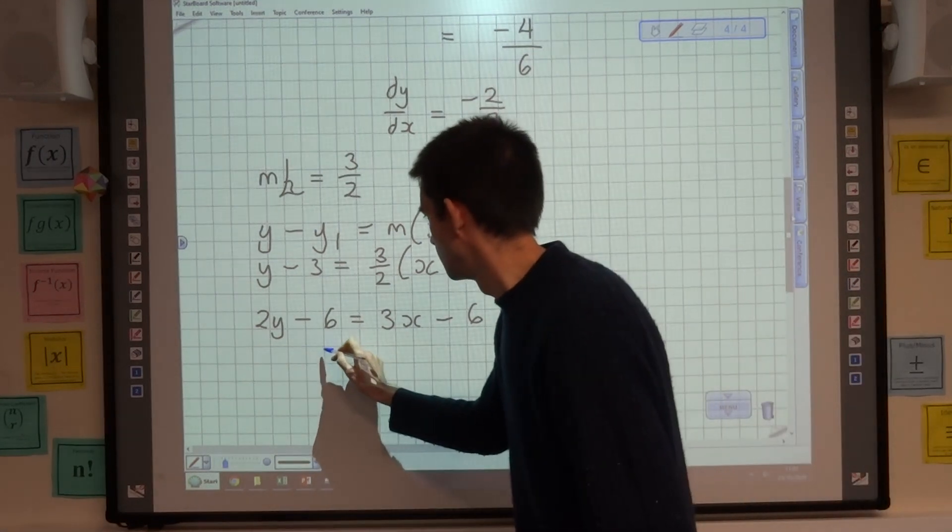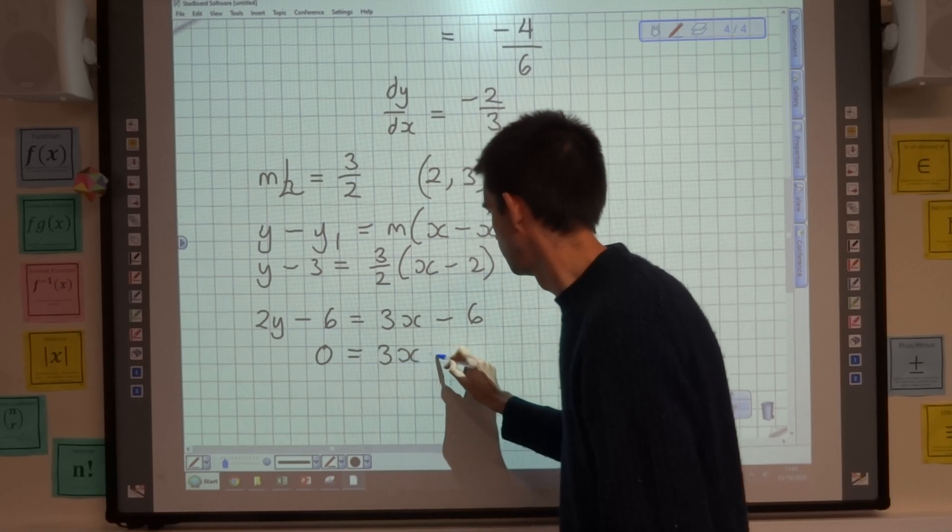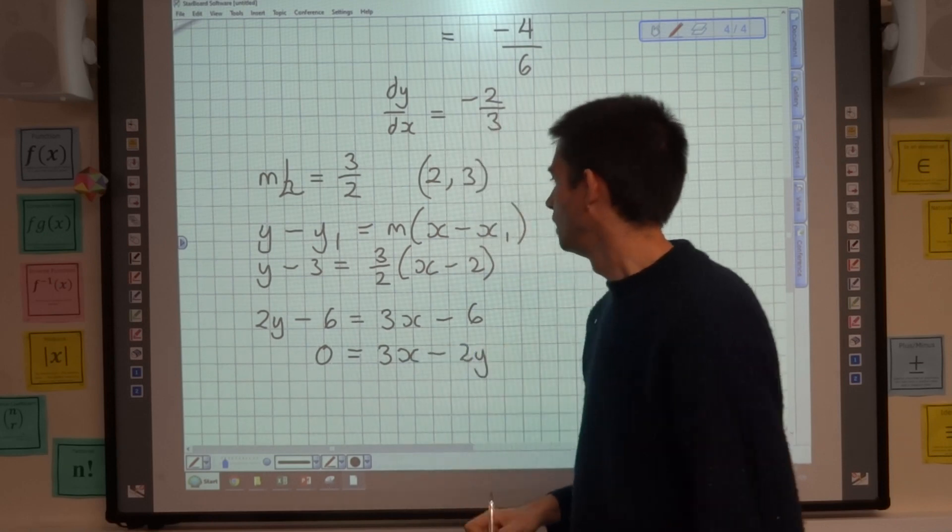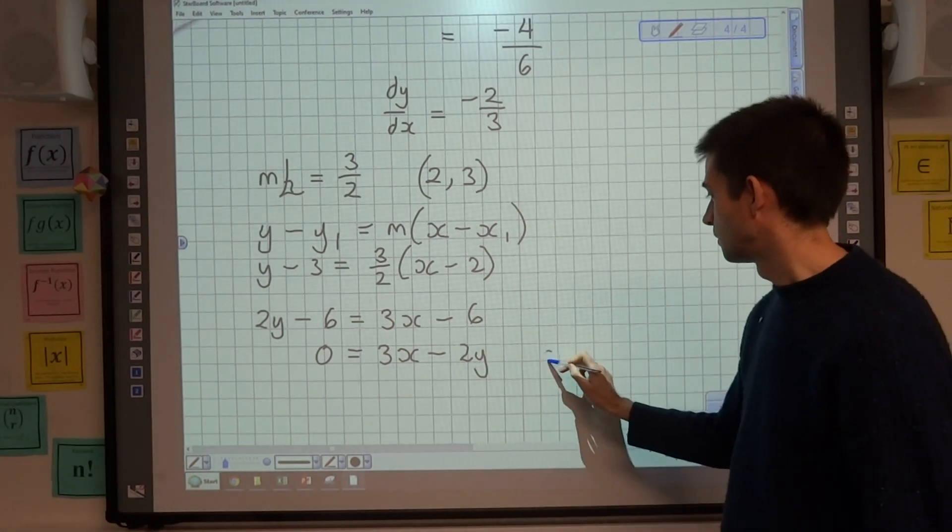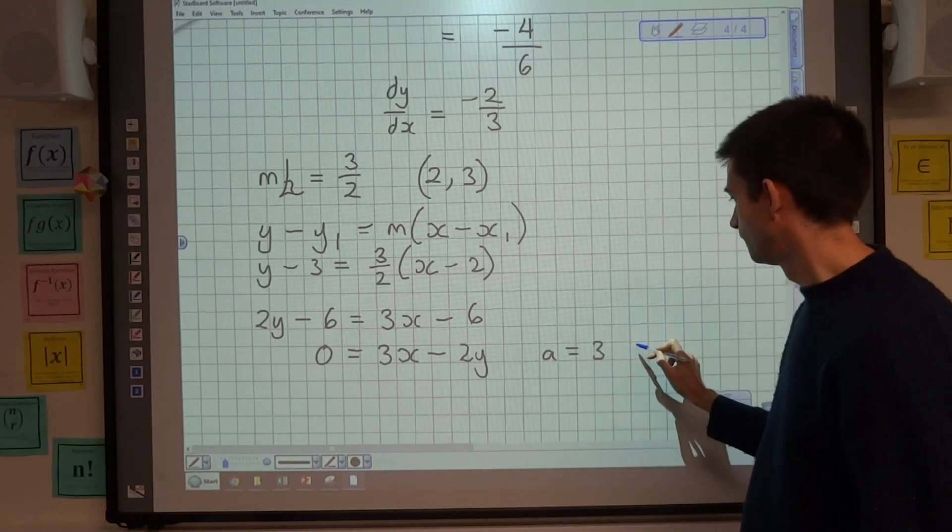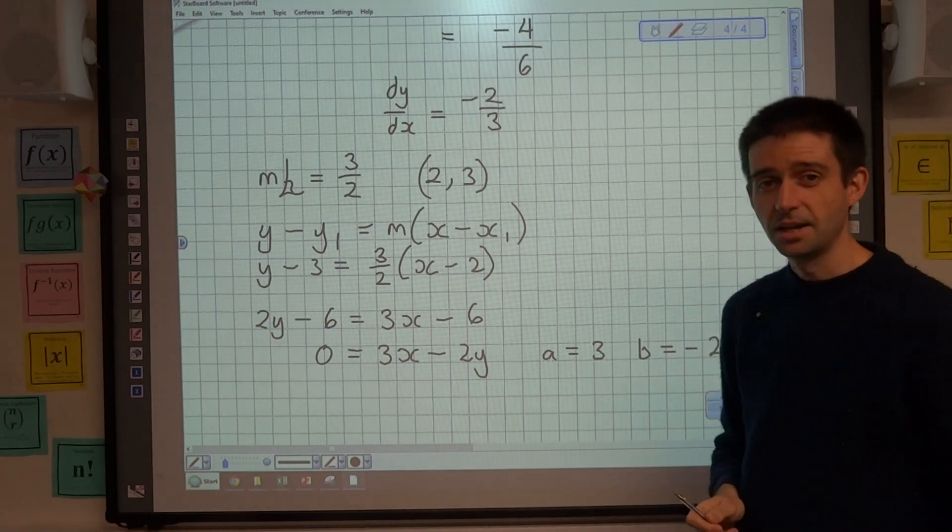And what that means is that if I move everything to the right hand side to keep the x positive, then I would have 3x - 2y, and adding the 6 would cancel out. So the value of a would be 3, and the value of b would be -2.